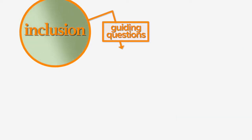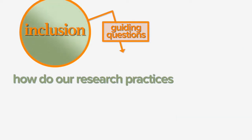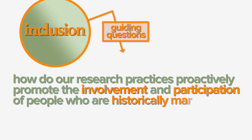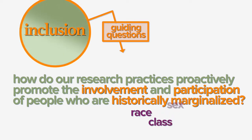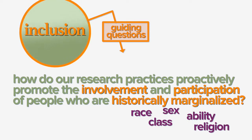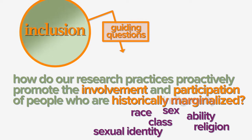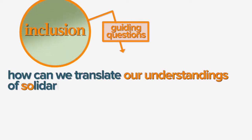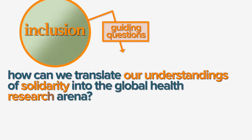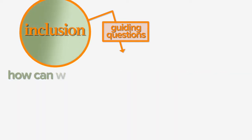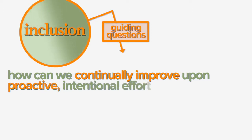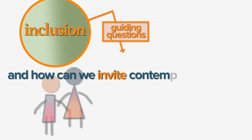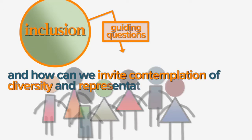We can ask ourselves: How do our research practices proactively promote the involvement and participation of people who are historically marginalised due to race, class, sex, ability, religion, sexual identity, indigeneity, and so on? How can we translate our understandings of solidarity into the global health research arena? How can we continually improve upon proactive, intentional efforts to be inclusive? And how can we invite contemplation of diversity and representation in our research efforts?